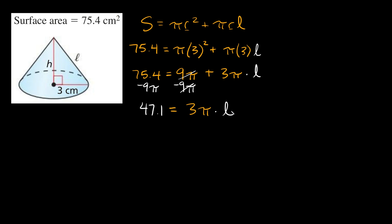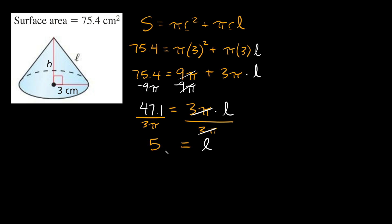To solve for l, divide both sides by 3π. The 3π cancels on the right, leaving just l. So l equals 47.1 divided by 3π, which equals 5. Since this is a length and our units are centimeters, l equals 5 centimeters.